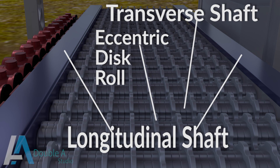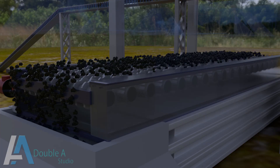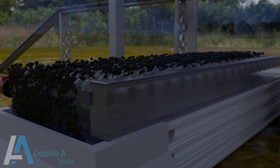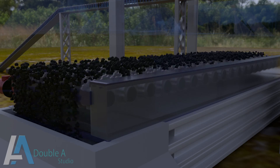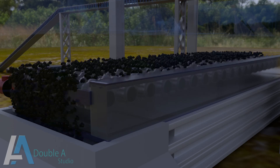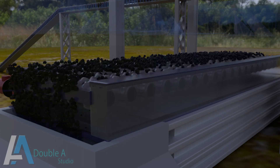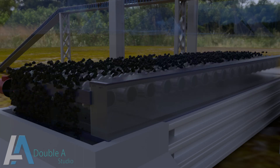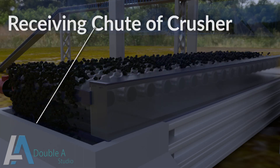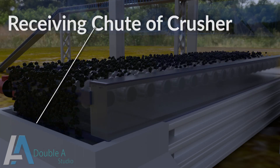When transverse shafts receive motion from two longitudinal shafts through the drive unit, several eccentric discs mounted on the transverse shaft rotate in the same direction. Due to the rotation and special shape of the eccentric discs, coal is lifted and pushed forward to the receiving chute of the crusher.